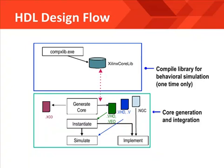The core generator supports schematic and HDL flows. Since most customers are using an HDL flow, we're going to focus just on that. The VHO and the VEO files are the HDL instantiation templates for VHDL and Verilog. They're provided by the cores generator automatically, based on your design entry options set within the ISE tools. We will assume you've selected an HDL flow.